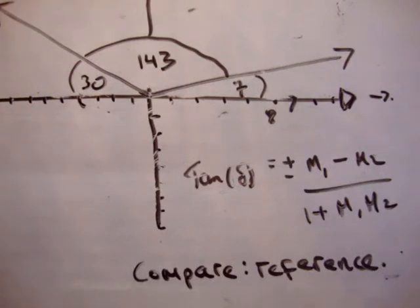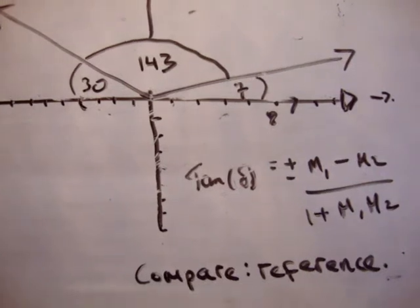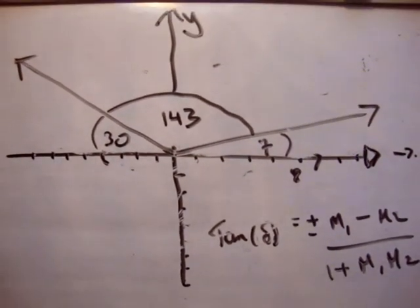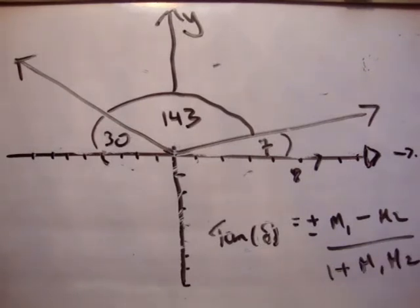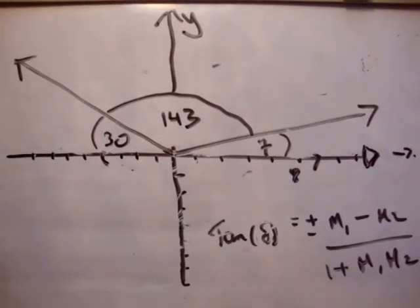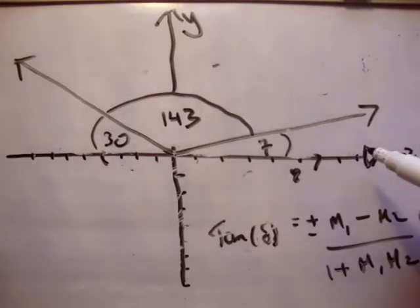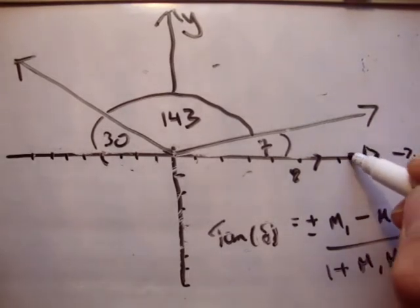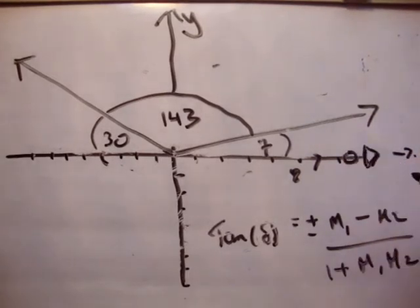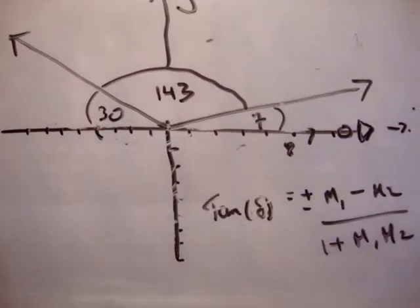In this case we want to compare the angle between the two vectors, so we need something constant — a reference point. What's normal is that you take your angle from the positive x-axis and work around.